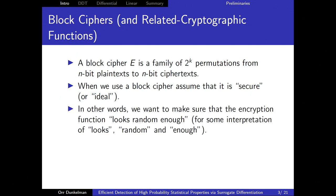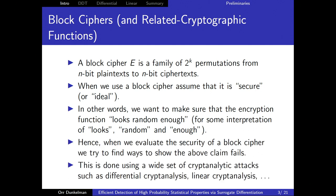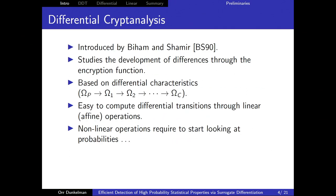Usually we assume block ciphers are secure, ideal, or strong under some definitions — meaning the block cipher looks random enough. Depending on your definition of security, 'looks random enough' is for you to decide. To evaluate security, we try to show these assumptions fail. As adversaries, we use attacks like differential cryptanalysis or linear cryptanalysis to show weaknesses in the cipher.